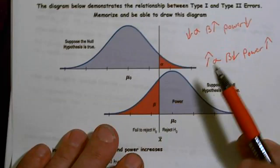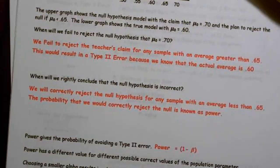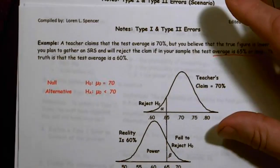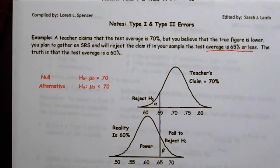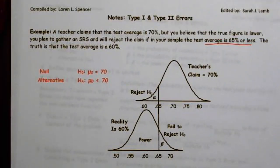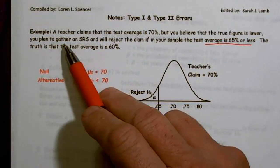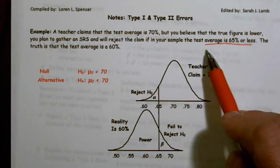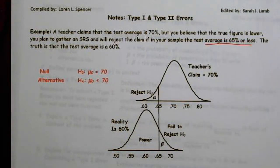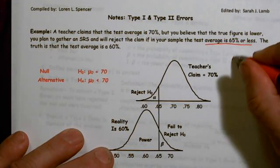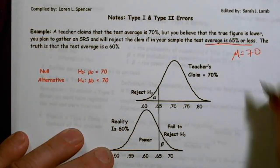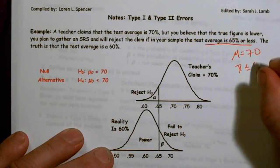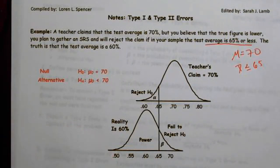So here's kind of a forced context of this. A teacher, let's just say it's your stat sensei, claims that the test average was 70%. But you believe the true figure is lower because you have too many friends that made 40% or whatever. So you gather a simple random sample and will reject the claim if in your sample the test average is 65% or less. So basically you said, if I get an X bar less than or equal to 65, I'm not going to believe it.